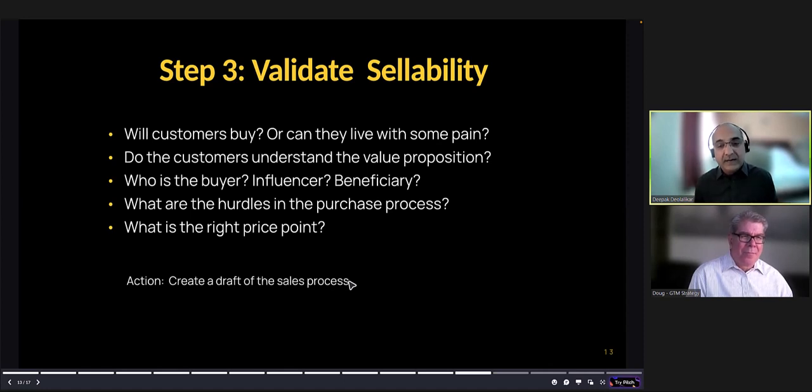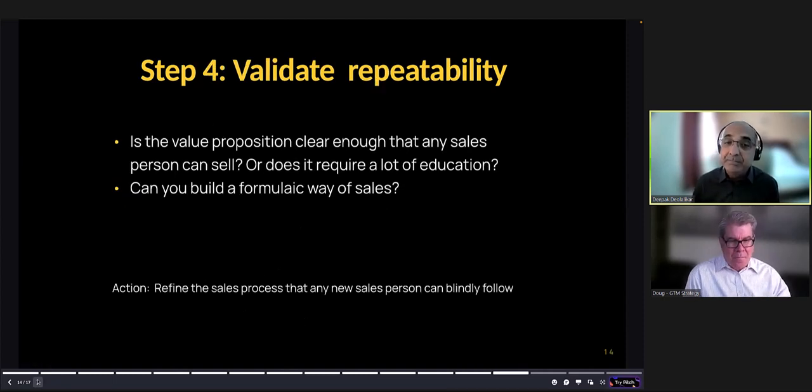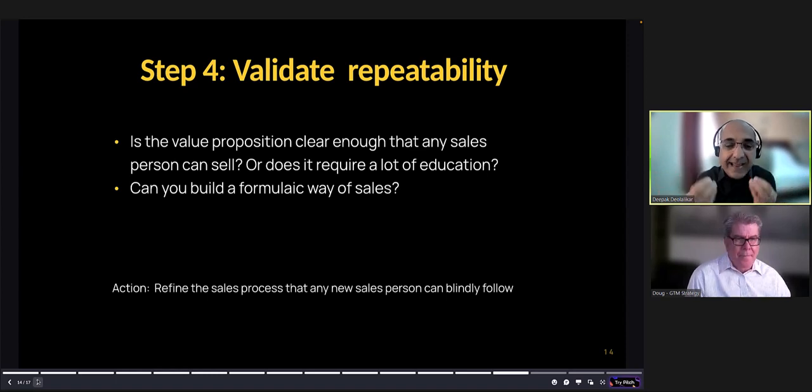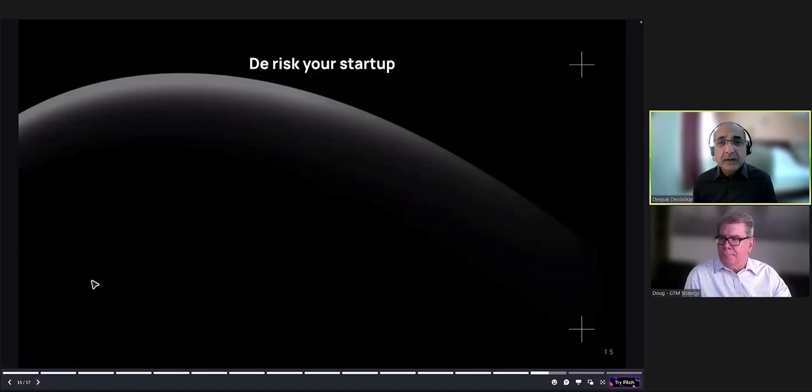What you learn out of that is what resonates because this output of this thing is going to be extremely important for the next step, which is validate repeatability. Is the value proposition clear enough that any salesperson can sell? The true test of repeatability is that you can hire any salesperson from any company and ask them to start selling. And they know exactly what the script looks like, what the talking points look like, how to give a demo, which features to highlight, which features not to highlight, or at least not yet. Basically, you are building a formula. Once you have built a formula, now you can test the formula and refine that sales process so that you are going to hire new salespeople. As you hire new salespeople, they need time to ramp up to that idea. And it should be very quick. They should be able to sell within two weeks or a month maybe.